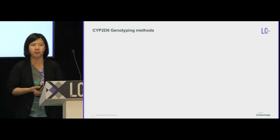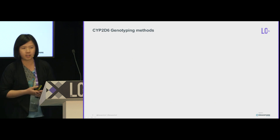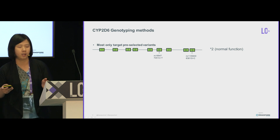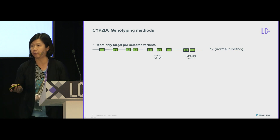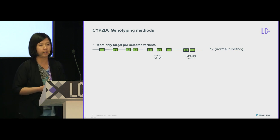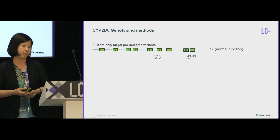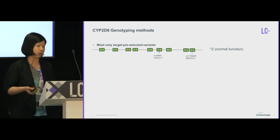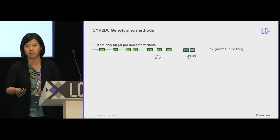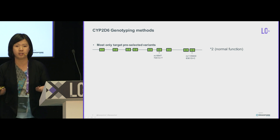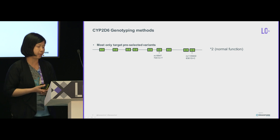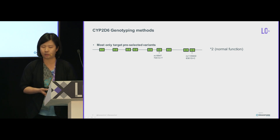All of these make CYP2D6 genotyping a very challenging job. Most current methods start with a long PCR to amplify the CYP2D6 gene and avoid mis-targeting of CYP2D7. Several approaches such as Sanger sequencing or real-time TaqMan assay can then be used to genotype. Most of these only target pre-selected variants because of the high number of variants in this gene, which is very useful in most cases but can also be problematic in certain situations.